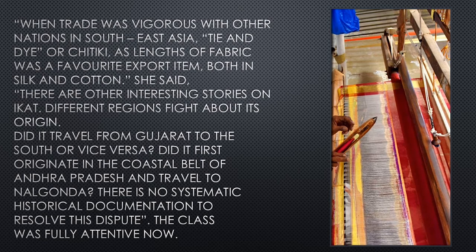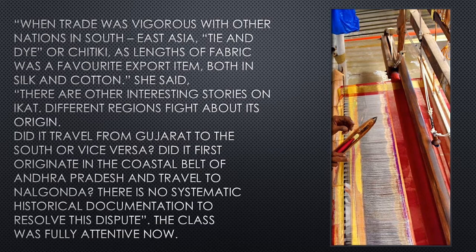When trade was vigorous with other nations in South East Asia, tie-and-dye or Chittike fabric was a favorite export item both in silk and cotton. She said, 'There are other interesting stories on Ikat. Different regions fight about its origins — did it travel from Gujarat to the south or vice versa? Did it first originate in the coastal belt of Andhra Pradesh and travel to Nalgonda? There is no systematic historical documentation to resolve this dispute.'